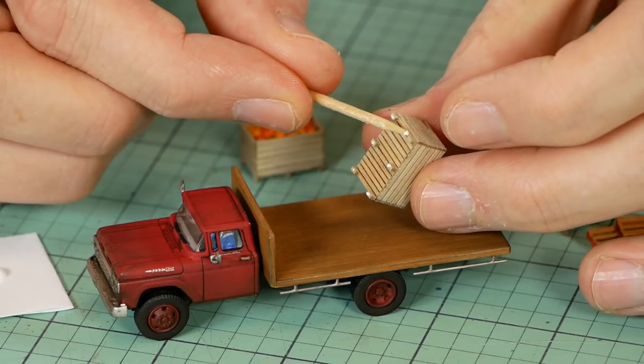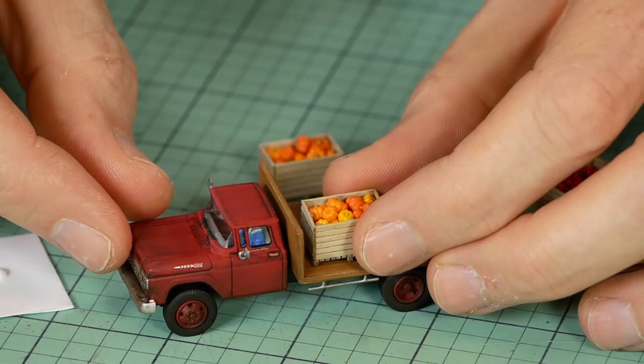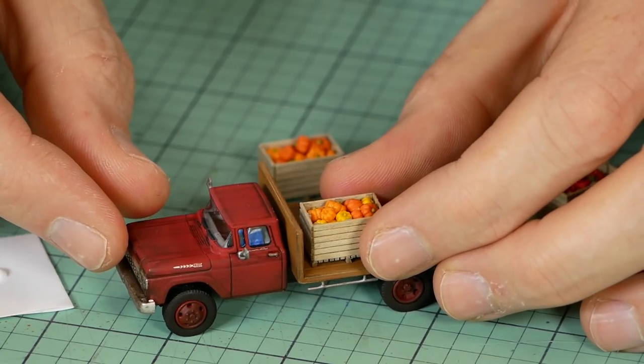The cargo is then glued onto the flatbed in the desired spot so it won't simply fall away when the truck is moved.